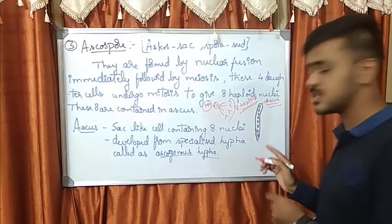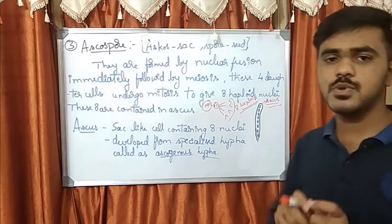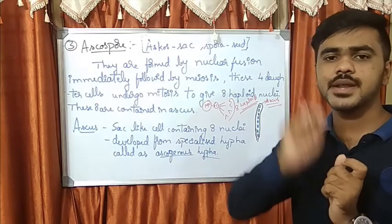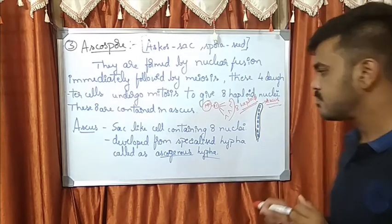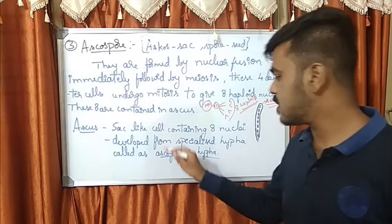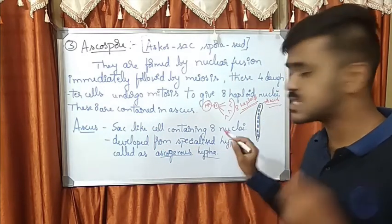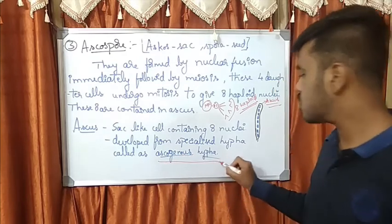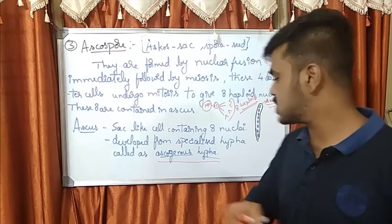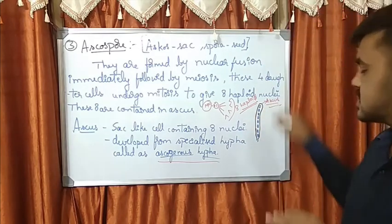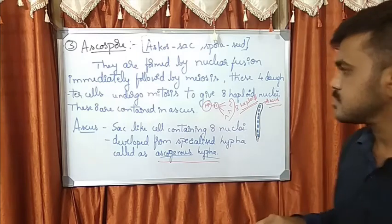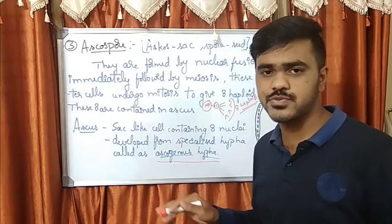These eight haploid nuclei are called ascospores and the sac is called ascos. This is the way the ascospore is formed. Whenever you hear the word ascospore or ascos, remember this structure. There will be a sac-like cell within which there will be eight haploid nuclei. These ascos are developed or formed by a specialized hypha called ascogenous hypha, and thus they result into ascogonium and form this sac which is a cell itself.